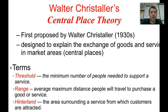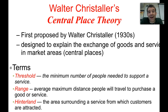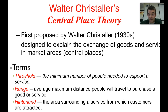To understand central place theory well, you should be familiar with three terms: threshold, range, and hinterland. Threshold is the number of people needed to support a particular service. Range is how far people are actually willing to travel to get a particular good or service. And the hinterland is the market area — the surrounding area from which customers are going to be attracted.